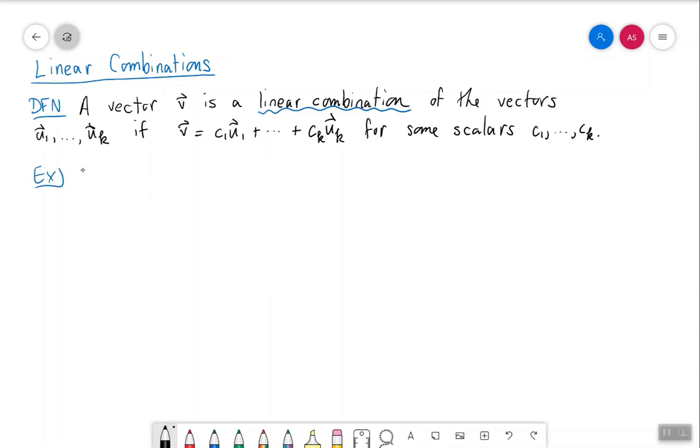Let's do an example. Is 1 minus 1 a linear combination of the vectors 1 1, 2 minus 1, and 0 1? Well,